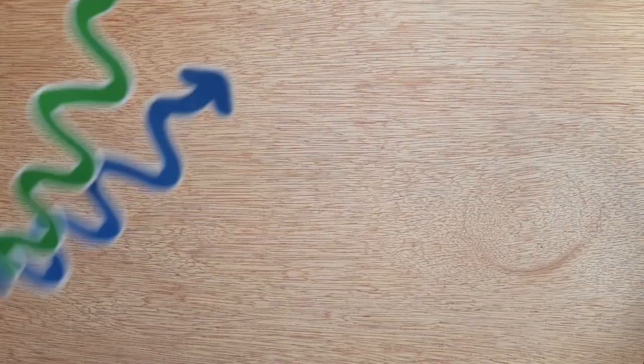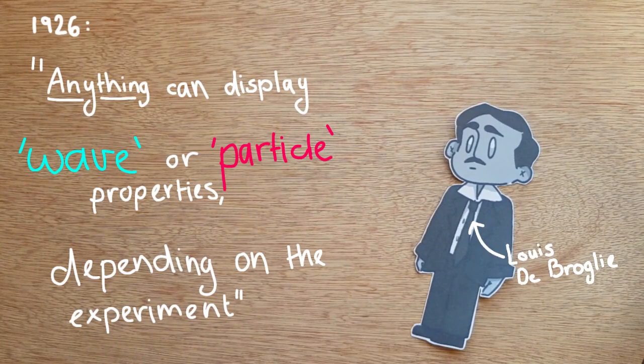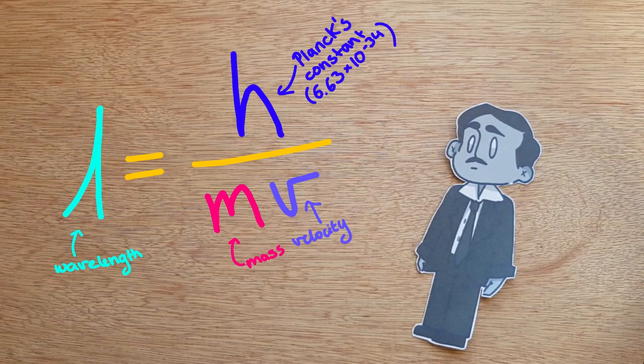But if waves can act like particles, can particles act like waves? In 1926, Louis de Broglie hypothesized that anything can display wave or particle properties depending on the experiment. He took an equation for wavelength that worked for rays of light and worked out the wavelength an electron would have if it was to be a wave.